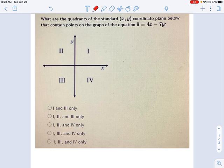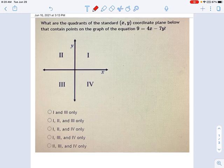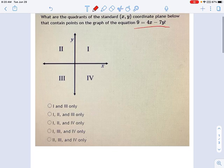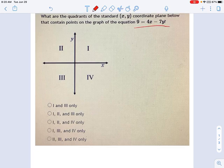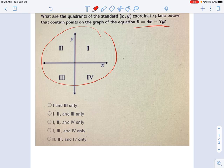So what this test does here is it says, I've got this equation, 9 equals 4x minus 7y, and I want to know which quadrants of this coordinate plane right here contain the line.